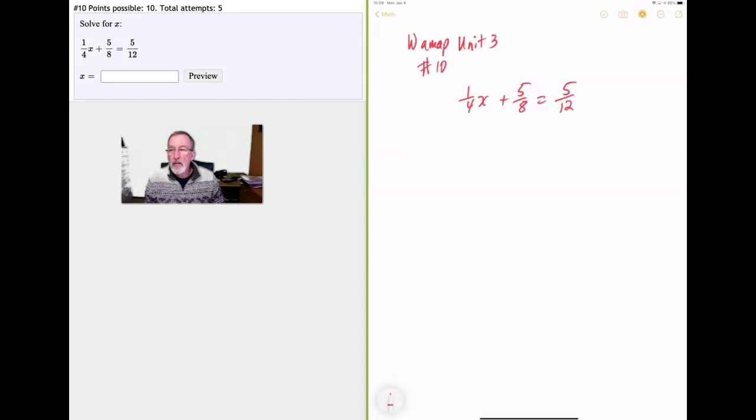It's frustrating to work through them, but as you get better at the practice test, you will do better on the midterm. We'll just keep moving ahead. We won't convert all these fractions at the beginning, we'll wait and see what happens. We have (1/4)x + 5/8 = 5/12, and we're going to solve for x.